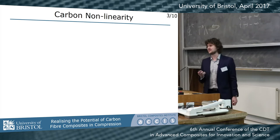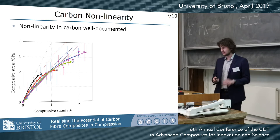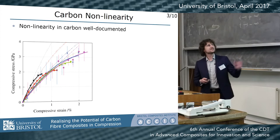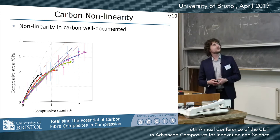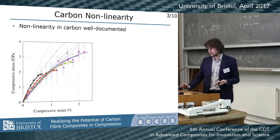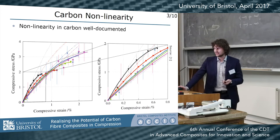When you think about carbon, we normally think about it as a linear material. However, we have well-documented nonlinearity in carbon. Everything we talk about here is compression, so all the strains I'm going to mention are compressive. This is just a collation of some results with compressive strain versus compressive stress, and we can see this softening of the material as the strain increases.